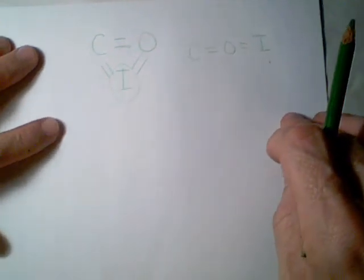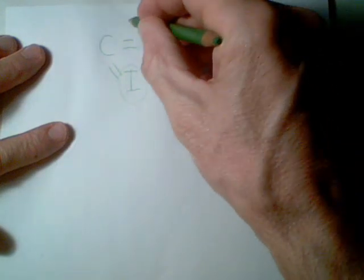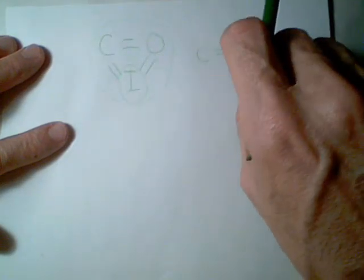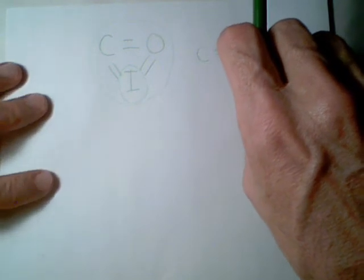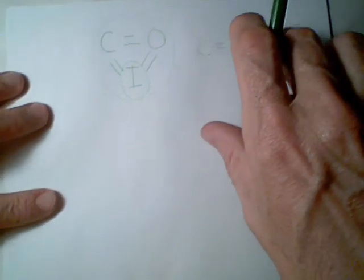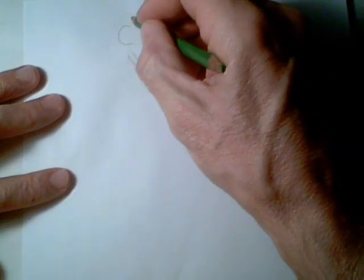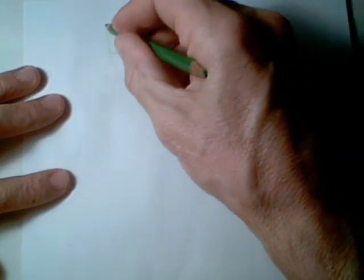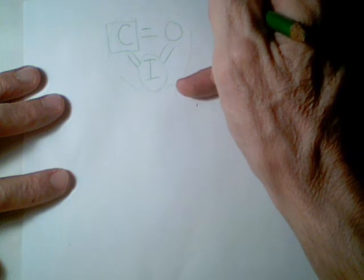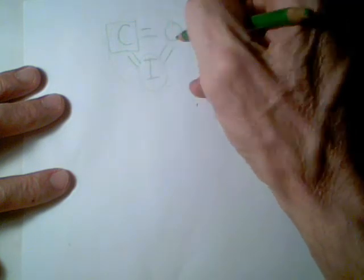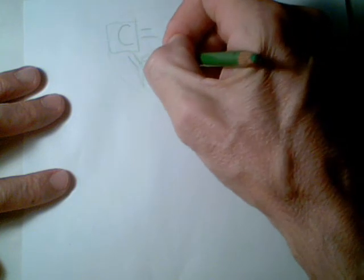Right now we're going to focus on a type of channel that the majority of channels actually behave like, and we're going to take the example of the sodium channel again and do the inactivation curves. These closed states are actually a bunch of conformations consistent with the closed state, leading ultimately into the open state, and there are several different inactivated states here.